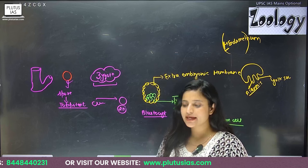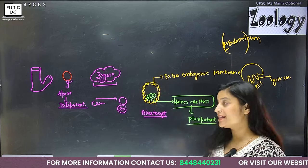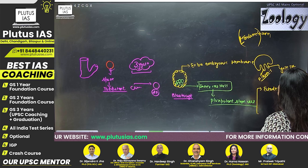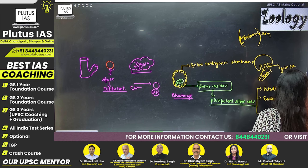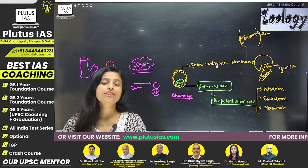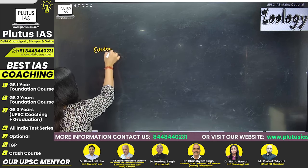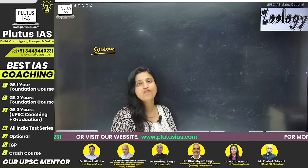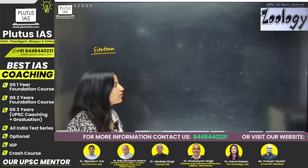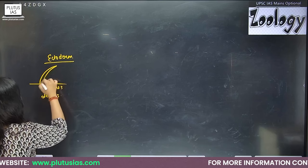The pluripotent stem cells of the inner cell mass differentiate into three germ layers: ectoderm, endoderm, and mesoderm. The ectoderm is responsible for the outer lining of the body. These ectodermal pluripotent stem cells differentiate into skin cells, hair cells, the epidermis layer, and the dermis layer, as well as hair follicle cells.